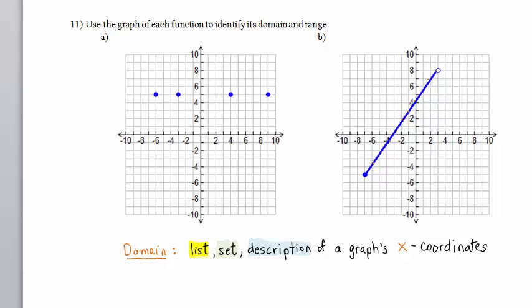We find the leftmost point, and that will give us the least x-value. This point here is leftmost. Its x-coordinate is negative 7. Then we find the rightmost point. Its x-coordinate is 3.